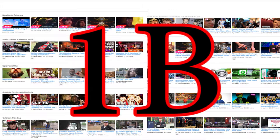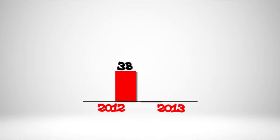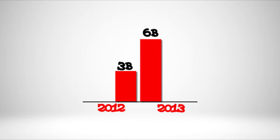Over a hundred hours of video are uploaded to YouTube every minute, and that's just YouTube. In just one year, the number of videos being watched each month doubled — from 2012 to 2013 the number of videos being watched on YouTube each month went from 3 billion to 6 billion per month. That's a 100% increase in just one year.